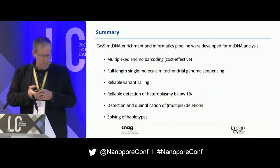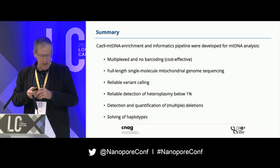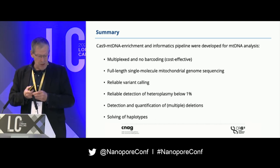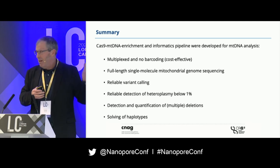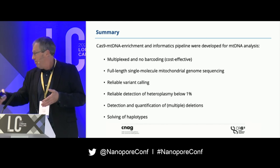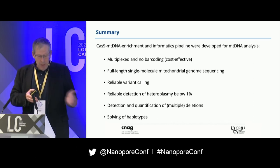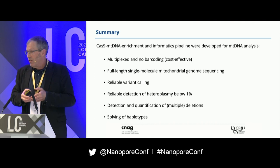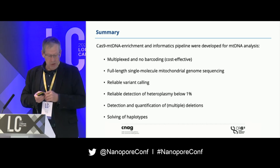In summary, I showed you a method for multiplexing that requires no extra barcoding — you can pool many samples together, making it cost-effective. We get full-length, single-molecule mitochondrial genome sequences. We have developed a pipeline that runs the entire analysis past Guppy on a regular commodity computer in a couple of seconds. We have reliable detection of heteroplasmy below 1%, we can quantify multiple deletions very accurately, and we can solve haplotypes — fully measured across the mitochondrial genome.